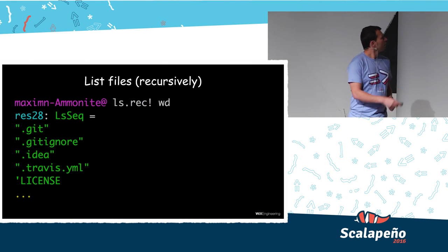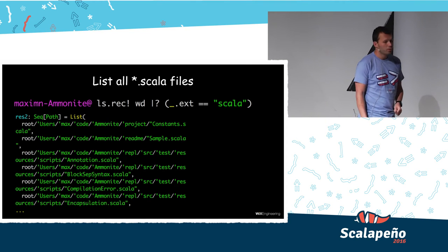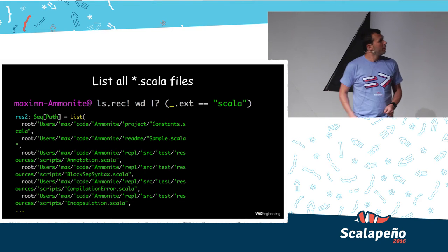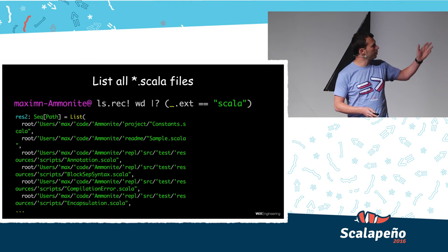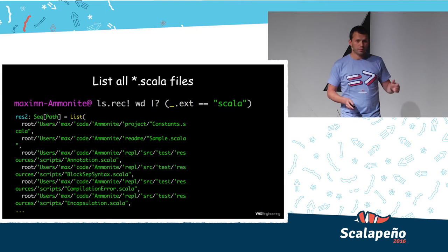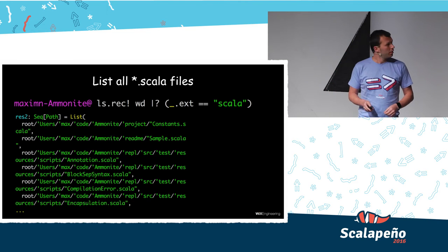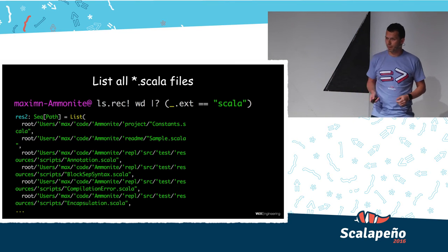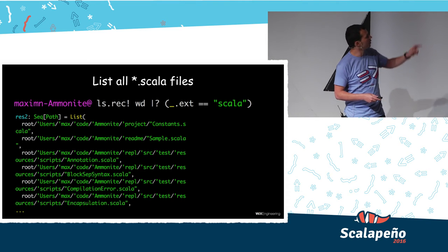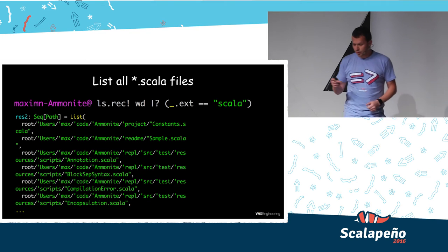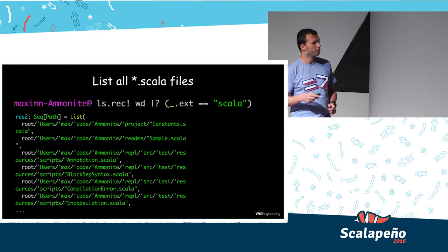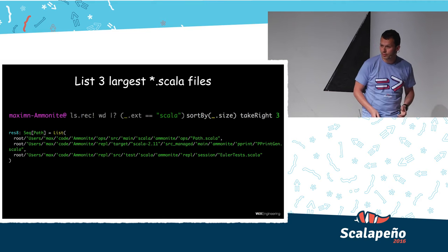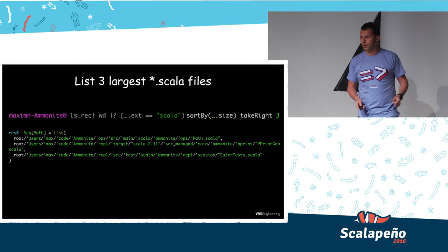What about listing all Scala files? We already know how to list all files. The pipe question-mark is an alias to filter — we can write filter in Scala — and then filter all files whose extension is Scala. A nice feature: when you write the underscore dot and press Tab, we have auto-completion showing all the fields of the path. And as you can imagine, the more complex problem from before becomes very easy now: we sort the result set by size and take the last three results.